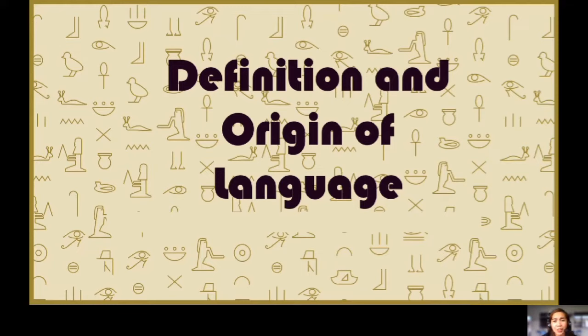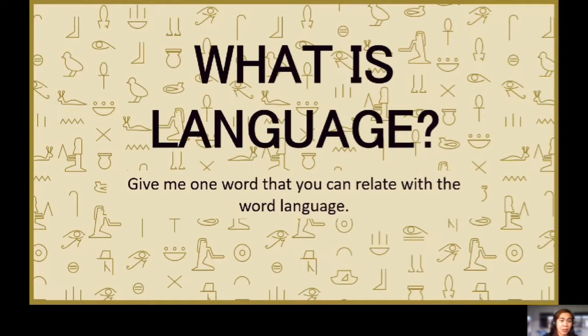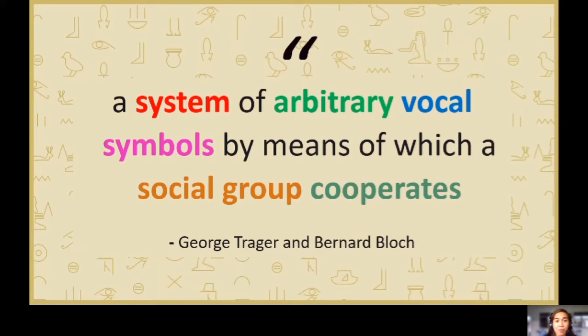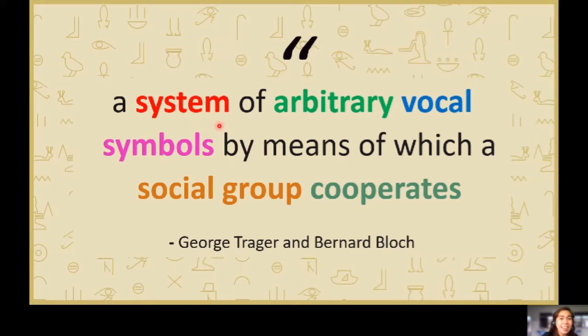We will have this definition and origin of language. Of course, we have to define it first. What is language? It is a system of arbitrary vocal symbols by means of which a social group cooperates. I wanted to highlight the meaning of language through this definition from Traeger and Blotch. Look at this word by word. First, it is a system. Language is a system because every language has its own rules, and we cannot apply a rule if there is no system.